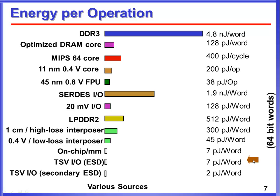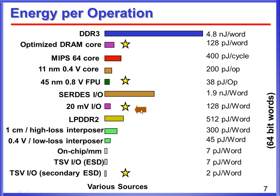Another aspect related to this is the power performance of computing. Here is a chart summarizing the energy per operation for different 64-bit operations. One result that's surprisingly power-efficient — at least surprising at first — is the actual computation itself. Because of silicon scaling, computation can be done very power-efficiently: more power-efficiently than moving data off-chip even with low-swing I/O, and more power-efficiently than storing data even in an optimized DRAM core. Normally, you don't want to move or store data because of the high energy costs.